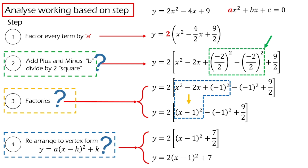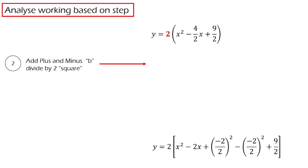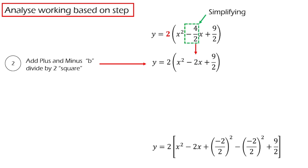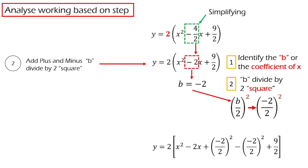Let's start discussing it one by one, starting with the second step: adding ±(b/2)². How do we get from the first line of the equation to the second one? First, we do simplification on -4 over 2, giving us y = 2(x² - 2x + 9/2). Now we identify the coefficient of x — our b is negative 2. We then compute (b/2)² — do not forget the negative here — and add ±(b/2)² into the equation.